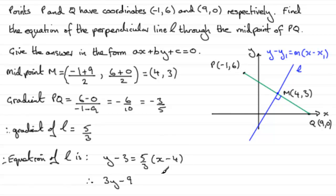The 3's cancel. So expanding 5 bracket X minus 4 gives us 5X minus 20.